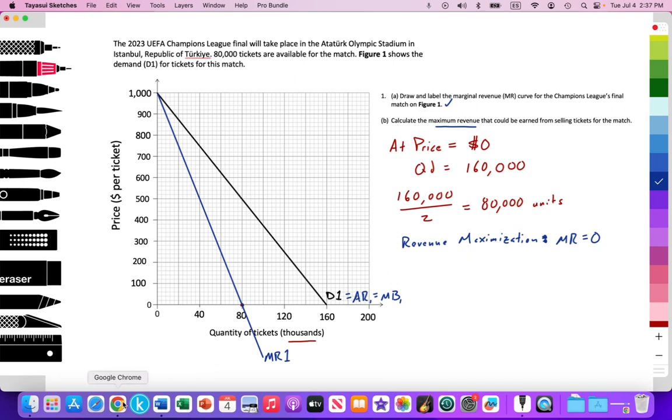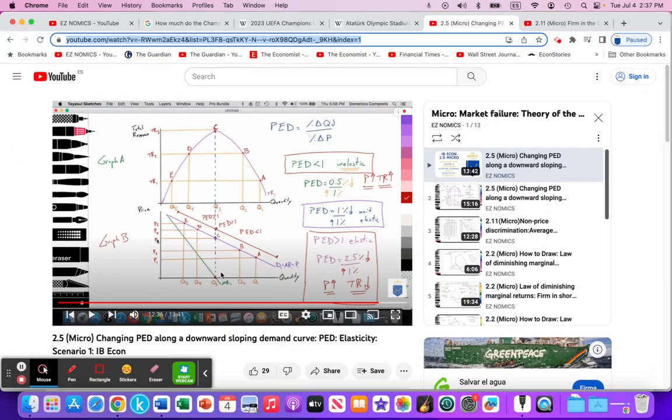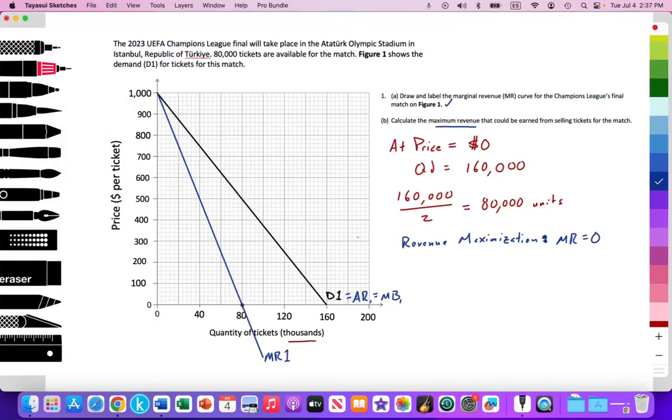Perfect. Again, going back to that video, which will be linked. We can see that where MR hits zero, PED equals one. Total revenue function is at max. Okay. So, revenue maximization, MR equals zero. You can also note that the PED value on the demand curve is equal to one. That is the unit elastic portion of the demand curve.